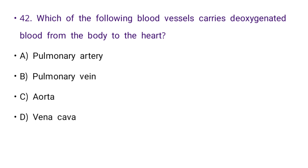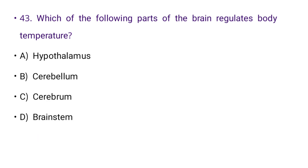Next: Which of the following blood vessels carries deoxygenated blood from the body to the heart? Options: pulmonary artery, pulmonary vein, aorta, or vena cava. The right answer is D: vena cava.